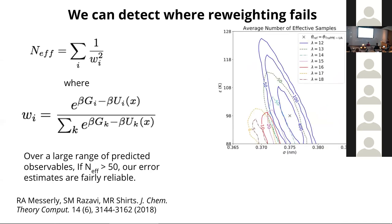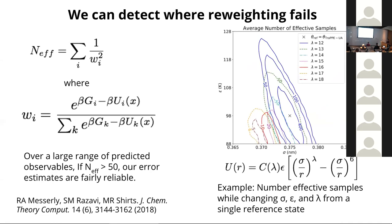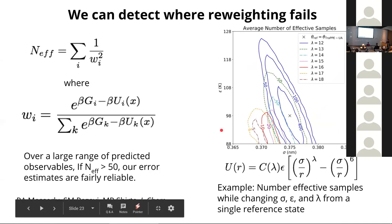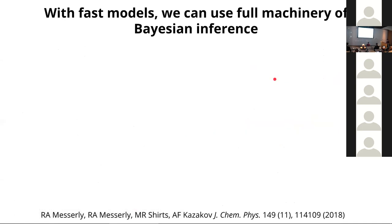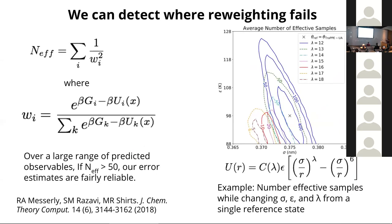Even with MBAR, in high-dimensional spaces, you need to evaluate energies at thousands of different parameters to get good coverage, and that starts getting slow. We've generally found that re-evaluating energies along trajectories at several different parameters is about a thousand times faster than running new simulations. Once you need to evaluate a thousand points, it starts being the same cost as the simulations themselves, motivating the use of a surrogate model for the free energy surface.